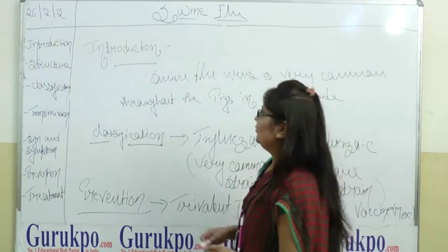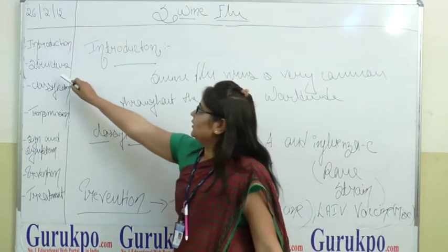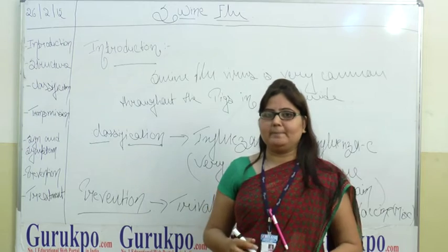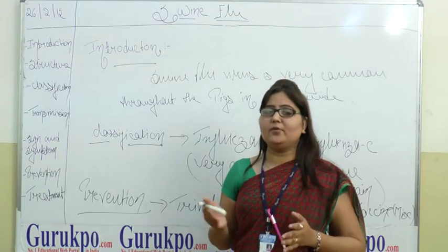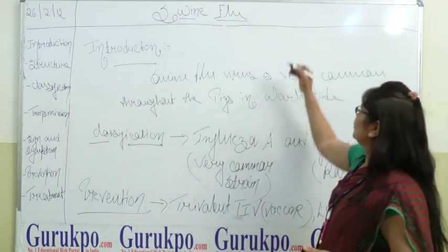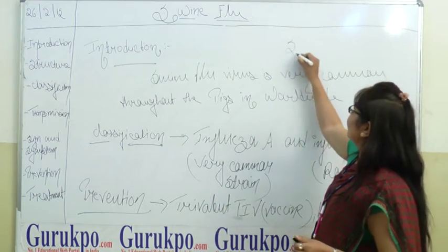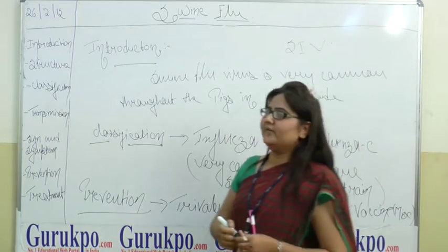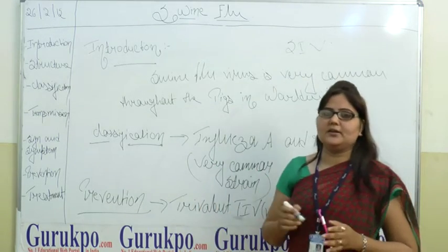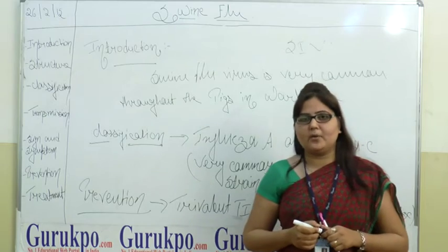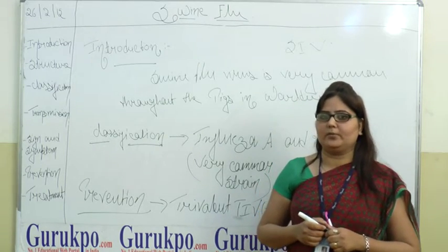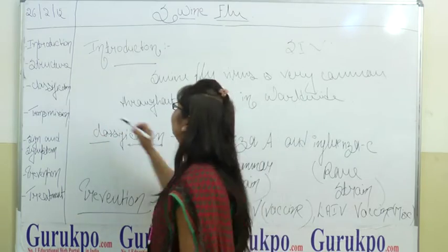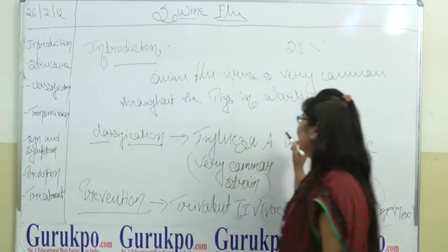Now the structure. Swine flu is mainly caused by the Swine Influenza Virus, also shortened as SIV. This SIV structure is spherical in form and the virus is enveloped.